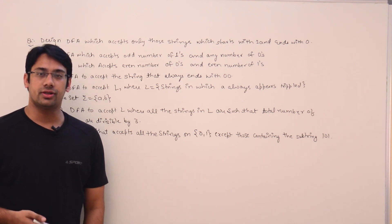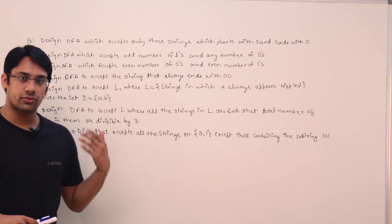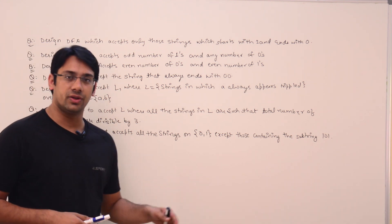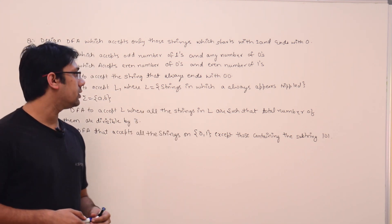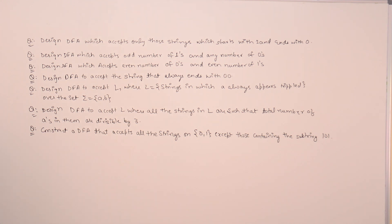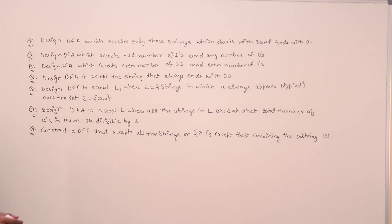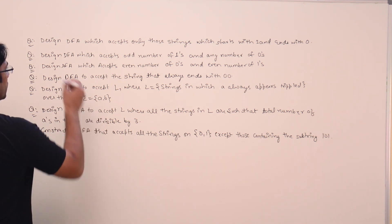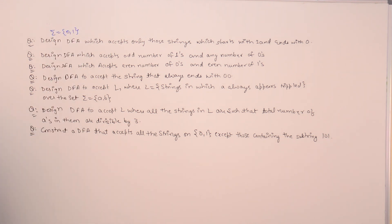Let us do these questions. I may have covered some of these before, but we are going to cover them again. If you can already do these questions, you can skip this part. So the first question is: design a DFA which accepts only those strings which start with 1 and end with 0, over the alphabet sigma equal to {0, 1}.